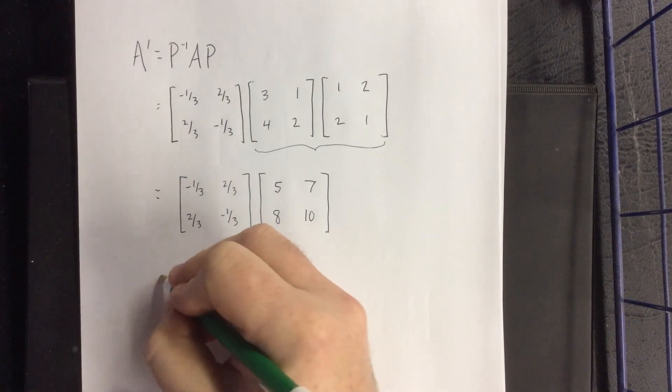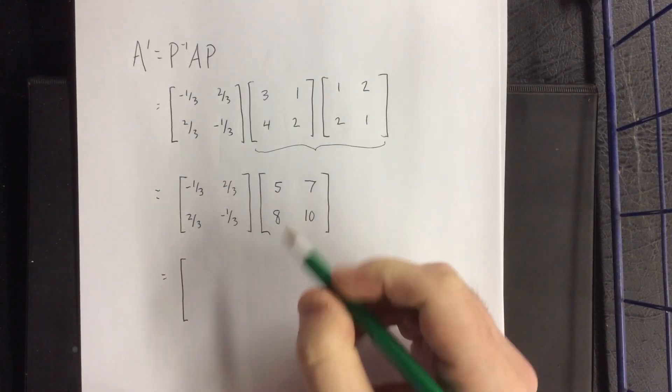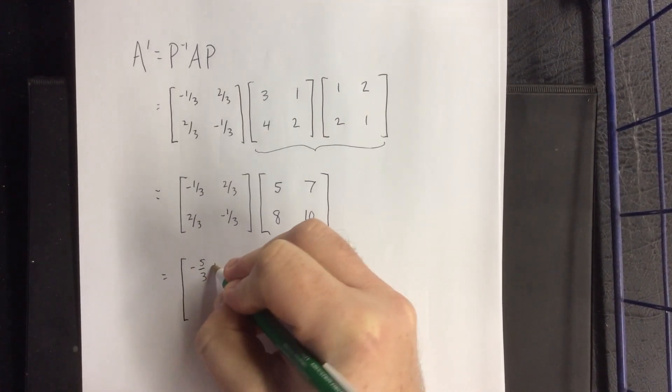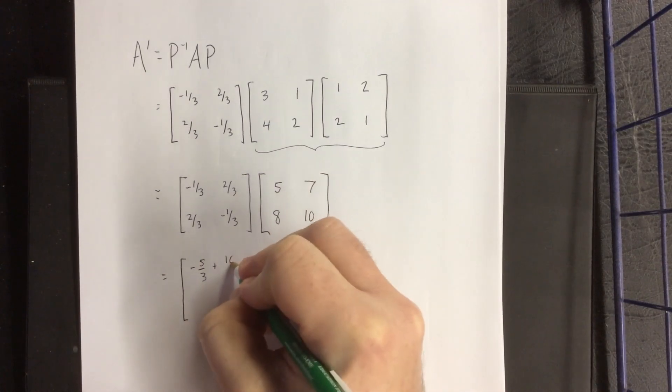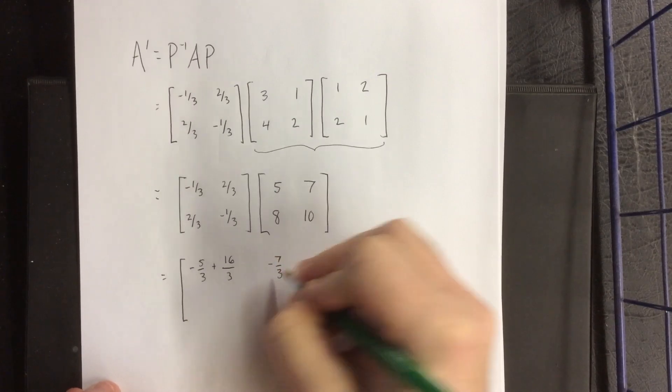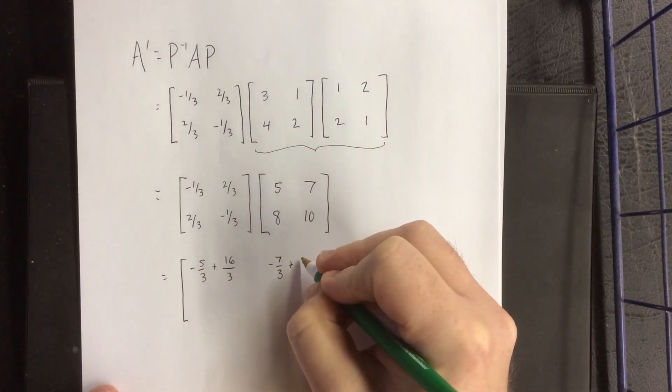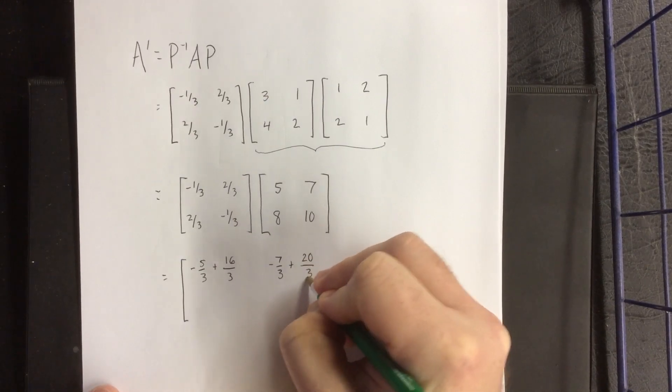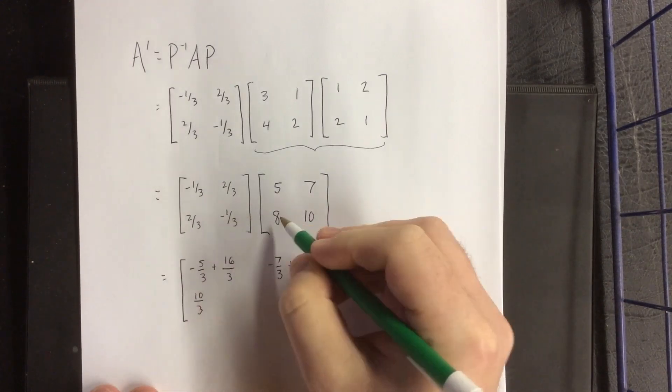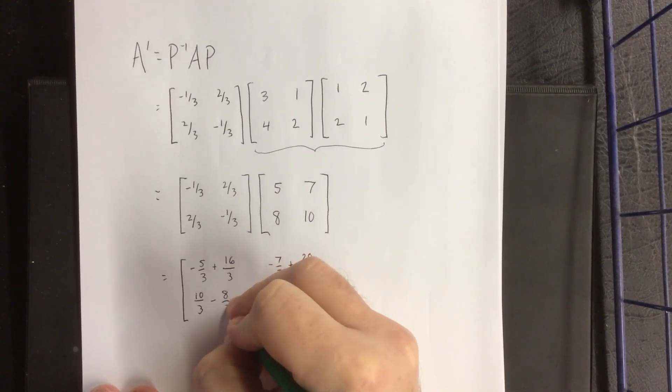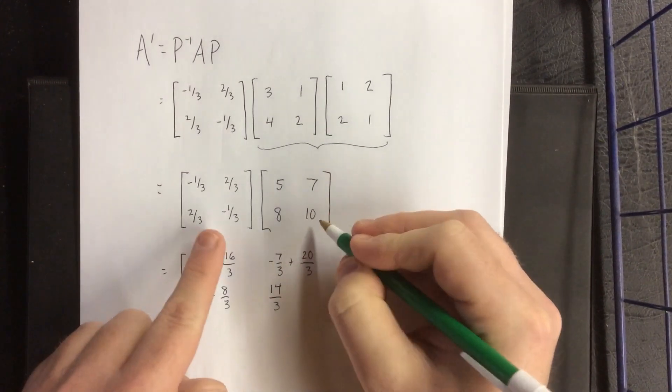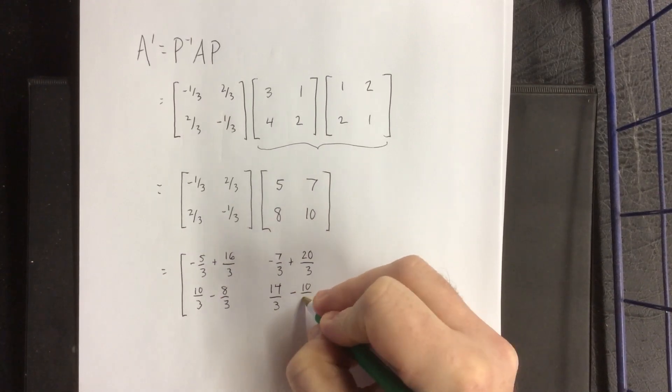Oh boy, this seems like it's going to be even more fun. This one I think I'm going to show my work a little bit better. So this will be -1/3 times 5, so -5/3, plus 2/3 times 8, so that'll be 16/3. -1/3 times 7, so -7/3, and then 2/3 times 10, so that'll be 20/3. 5 times 2/3 plus -1/3 times 8, so minus 8/3. And then 2/3 times 7 minus 1/3 times 10, so minus 10/3.